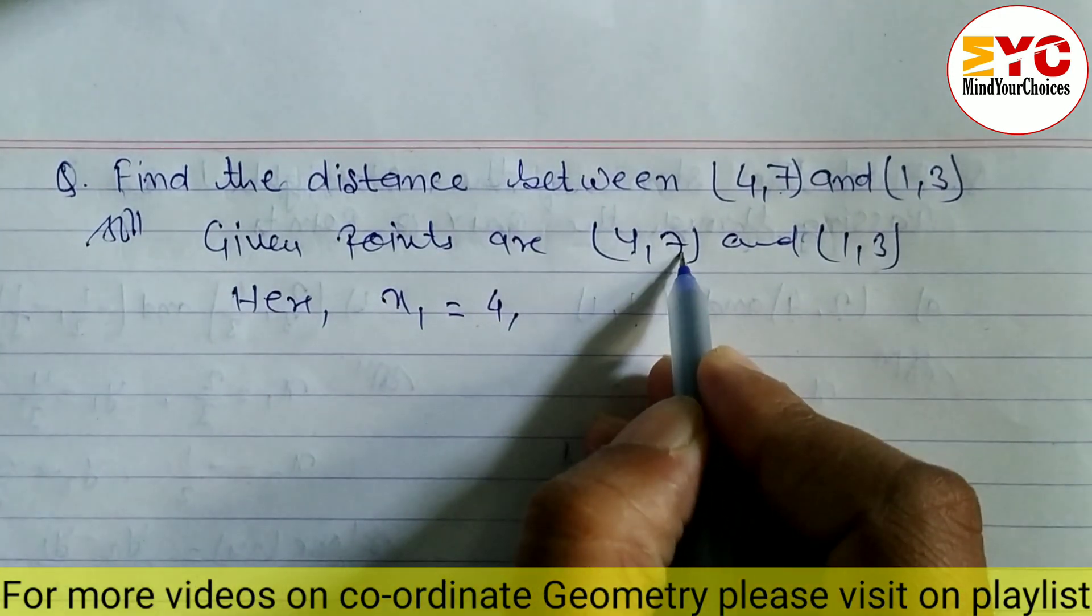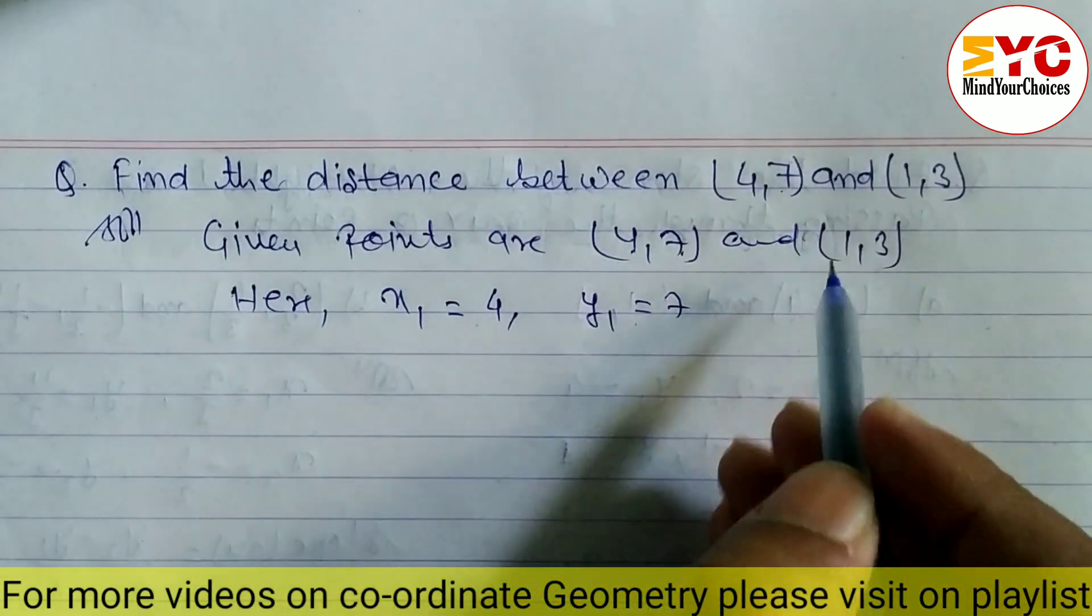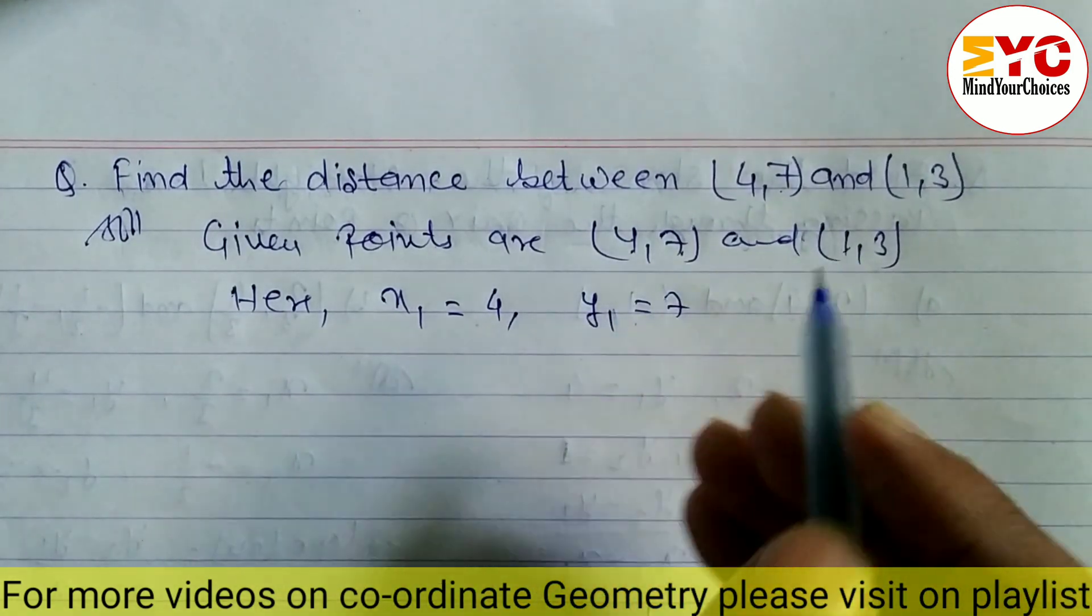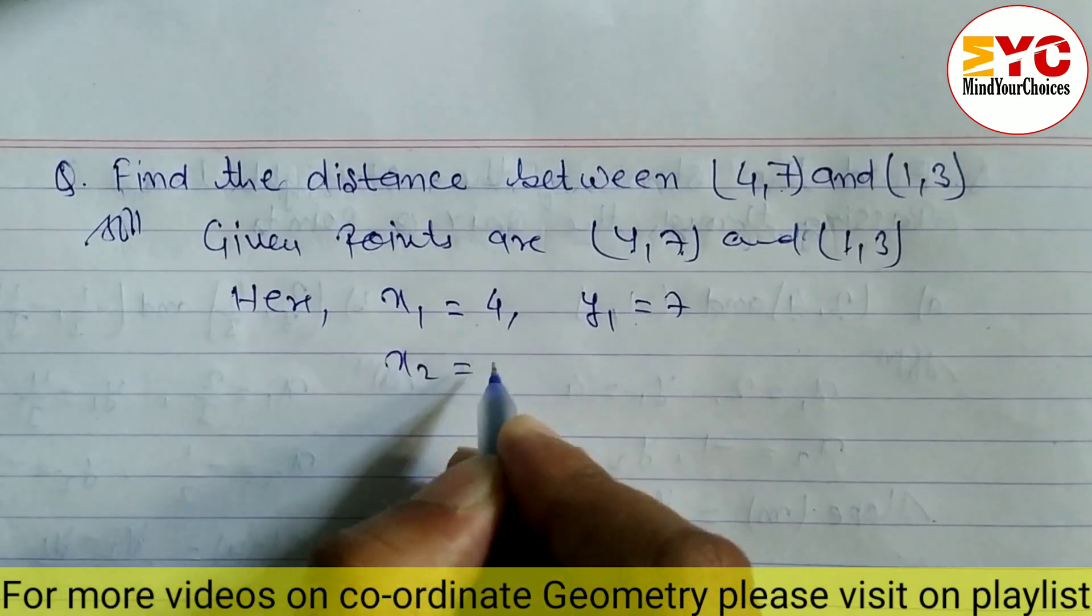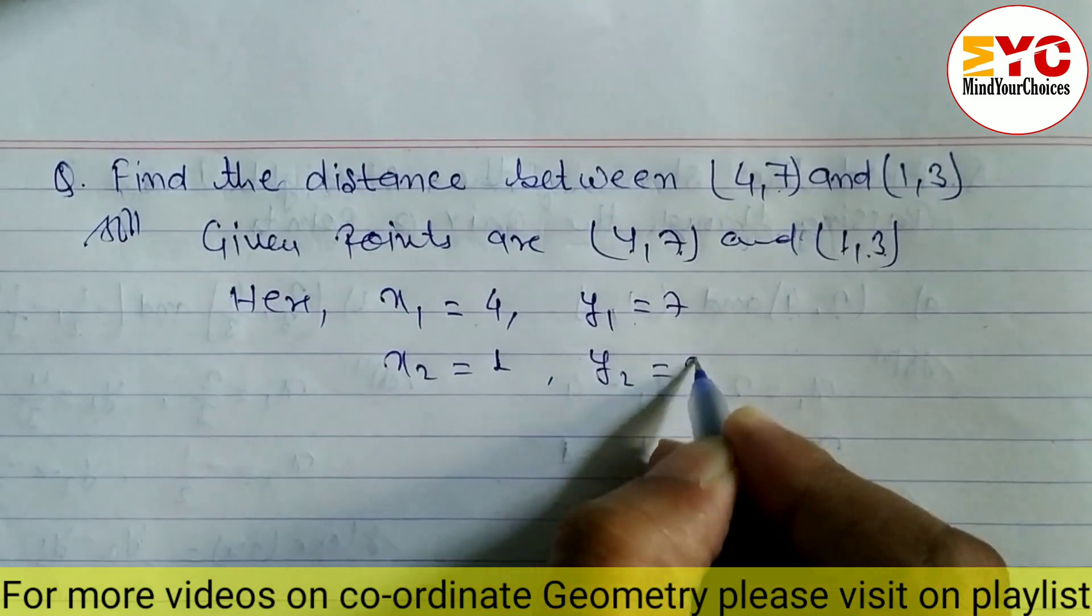The first element of the second point is x2, which equals 1, and the second element of the second point is y2, which is 3. So we have x1=4, y1=7, x2=1, y2=3. Now we will use the distance formula.